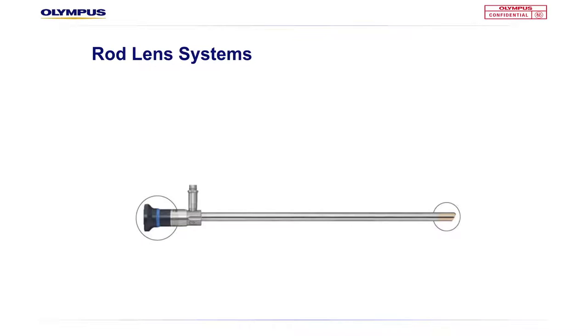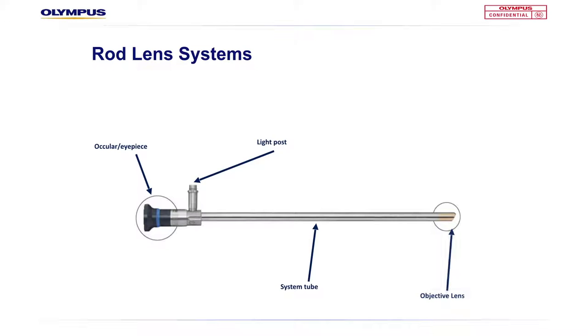Although these rod lens telescopes come in various diameters, lengths, and angles, each rod lens telescope can essentially be labelled with the same parts: an ocular, a light post, a system tube, and an objective lens. A sapphire is used for the objective lens, providing optimal strength and scratch resistance. Rod lens telescopes share the same components but are manufactured in a range of different diameters, lengths, and angles depending on their intended use.